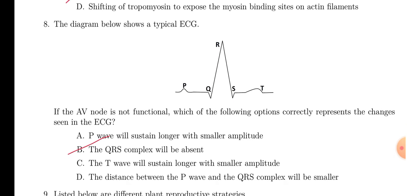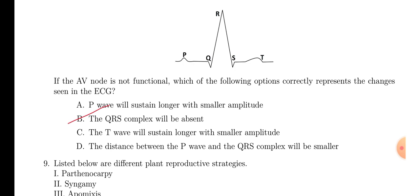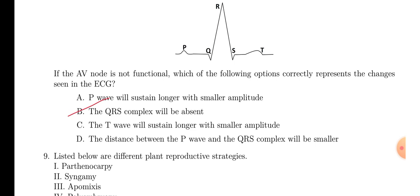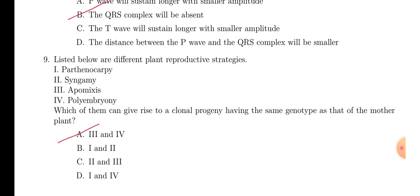Next is the diagram of ECG. And, here they are saying that AV node is not working. So, we know the SA node is the pacemaker of heart. And, the impulse created from there moves or goes into AV node. So, if AV node is not working or it is non-functional, then impulse will not move to the ventricle. So, ventricle will not contract. So, the whole QRS complex will be absent. That is the option B, QRS complex will be absent.